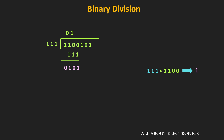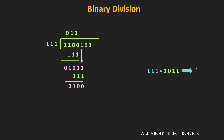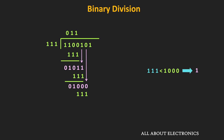We bring down the next bit of the dividend, which is 1. Comparing 1011 with 111: since 1011 is greater than 111, we can perform the subtraction, so in the quotient we write 1. After subtraction, the result is 100. We bring down the next bit, which is 0. Comparing 1000 with 111: since 1000 is greater than 111, we write 1 in the quotient. After subtraction, the result is equal to 1.